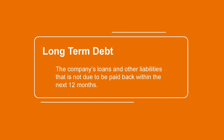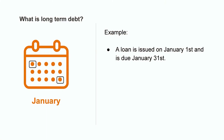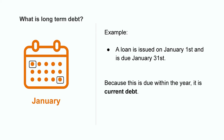In accounting, when we refer to long-term debt, we're talking about a company's loans and other liabilities that won't come due until future years. To be more specific, it's any debt that's not due to be paid back within the next 12 months. Let's say it's currently January and a company needs a quick loan to purchase some inventory that they plan to pay back quickly. They borrow money from the bank on January 1st and plan to pay it back by the end of the month. Since this loan comes due within the current year, it would not be considered long-term debt, but instead would be categorized as current debt.